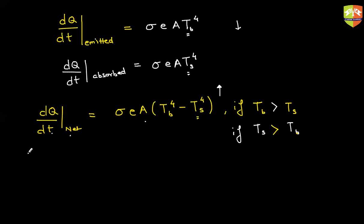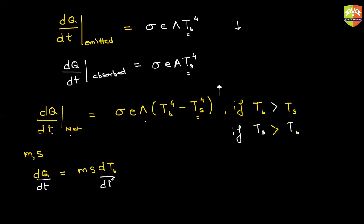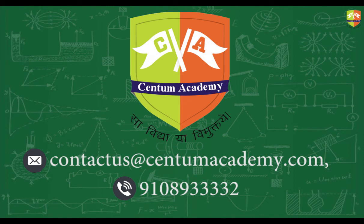Now let's say the mass of the object is m and specific heat is s. Then dQ equals m·s·dT, where dT is the change in temperature of the body. So dQ/dt will be equal to m·s·(dT/dt). I can equate these two to get a differential equation.